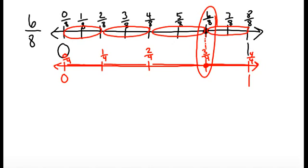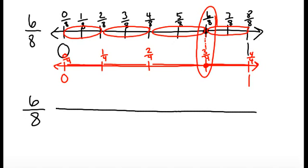Well, if I just made my parts bigger, could I make the original parts smaller? Let's look at 6 eighths again. So I'm going to redraw 6 eighths on a number line. And I know 6 eighths gets here.